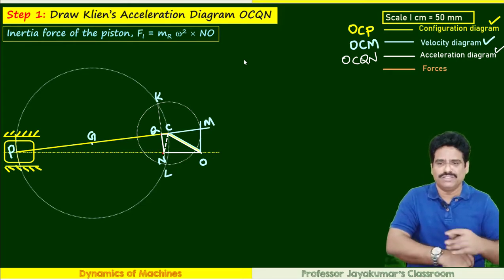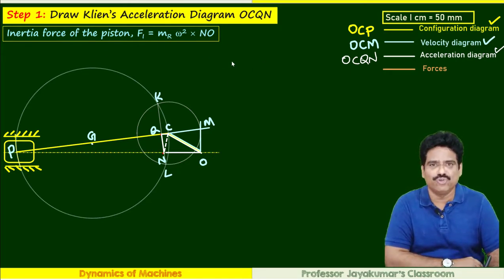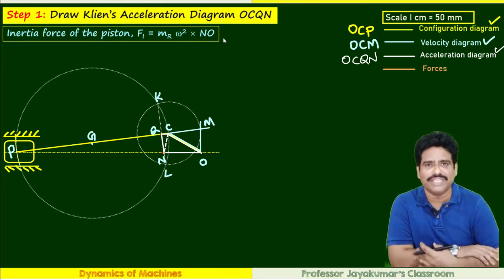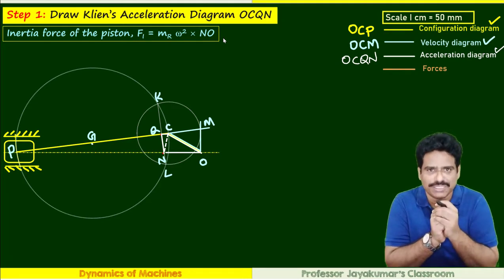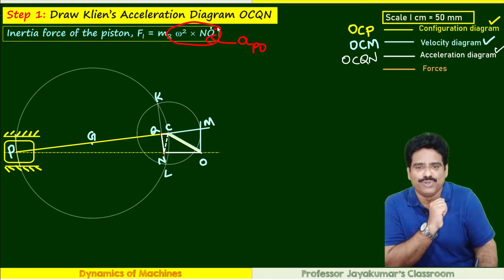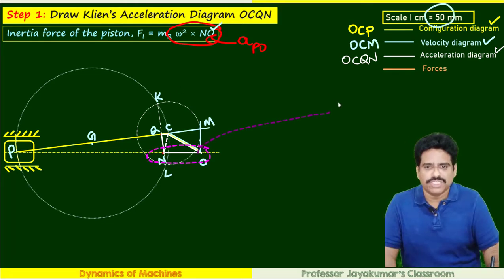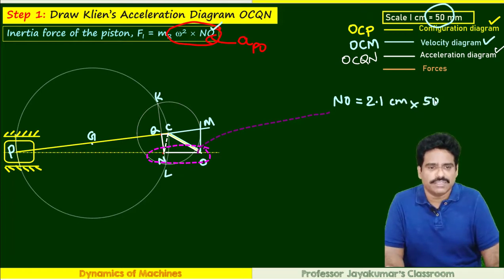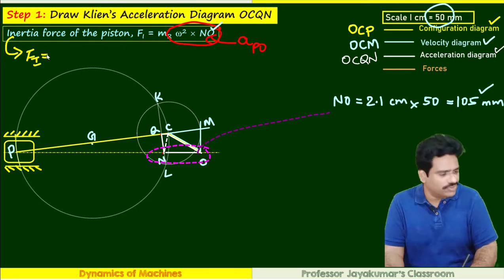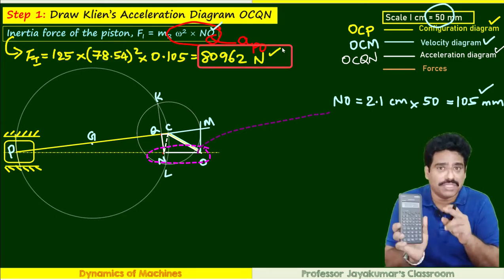From Klein's acceleration diagram, vector NO gives the acceleration of the piston. By measurement, NO is approximately 2.1 cm; multiplied by scale this gives 105 mm. Inertia force of the piston Fi = mass of piston × acceleration of piston, giving us the value of Fi from step 1.